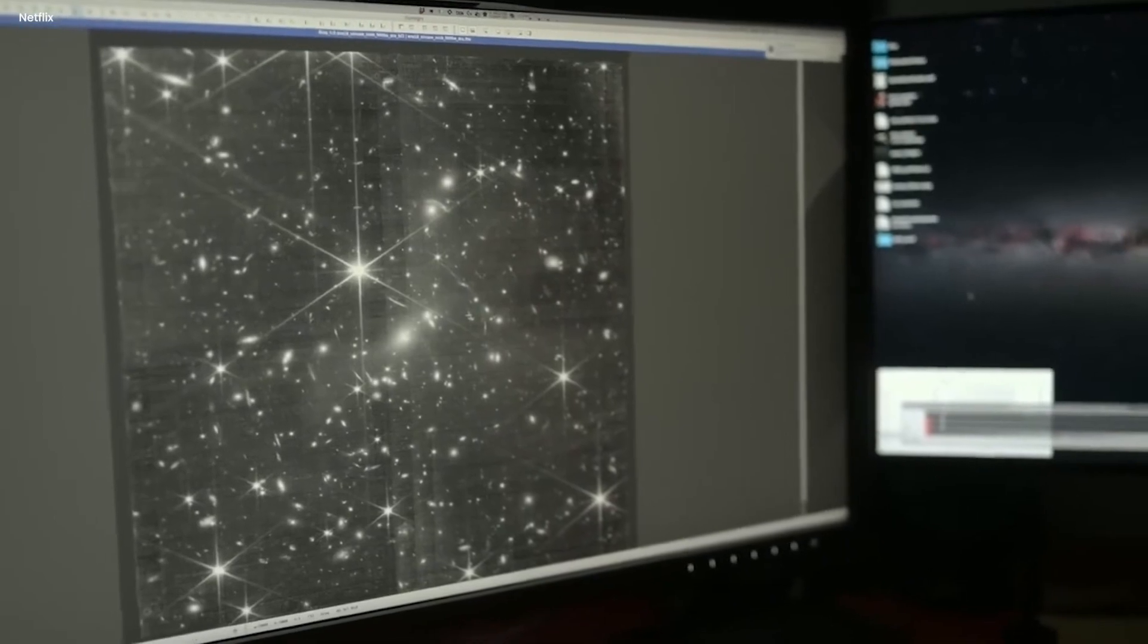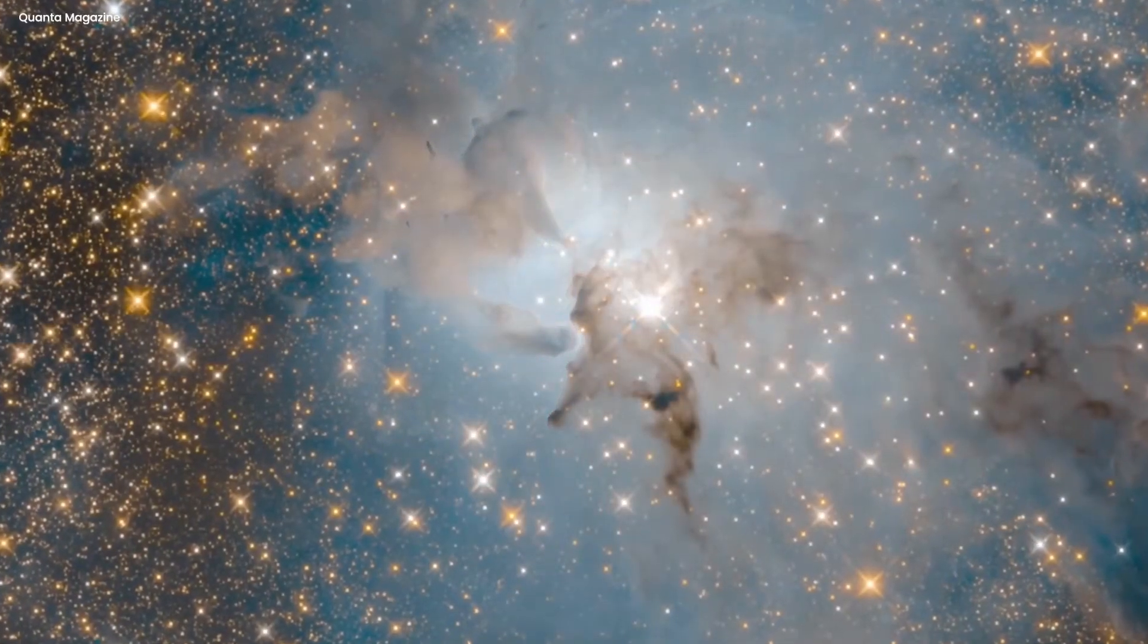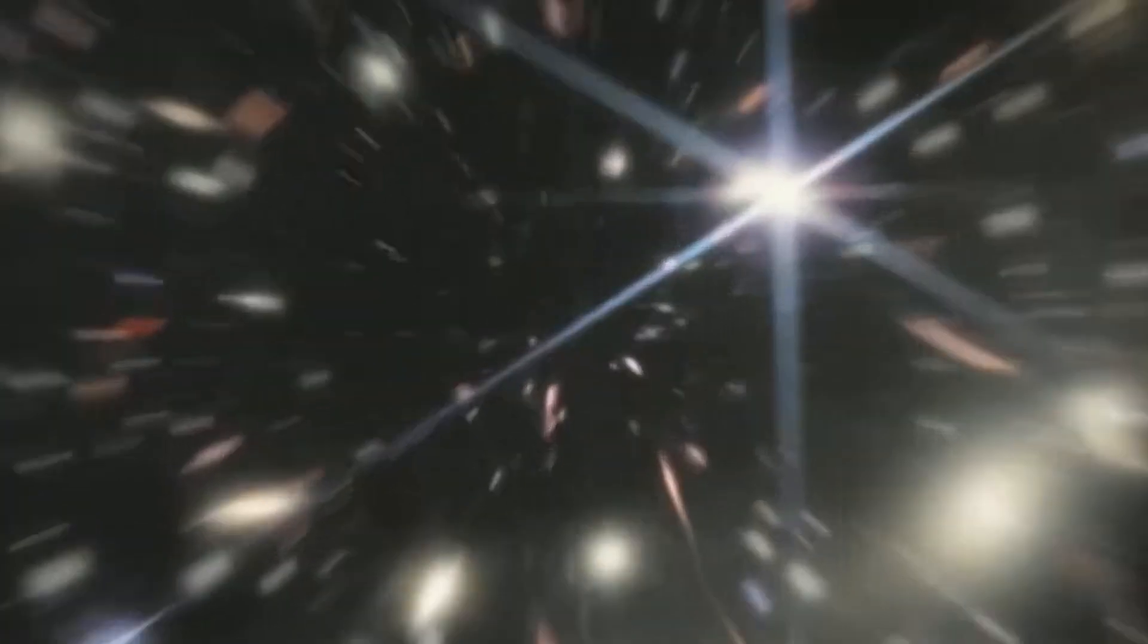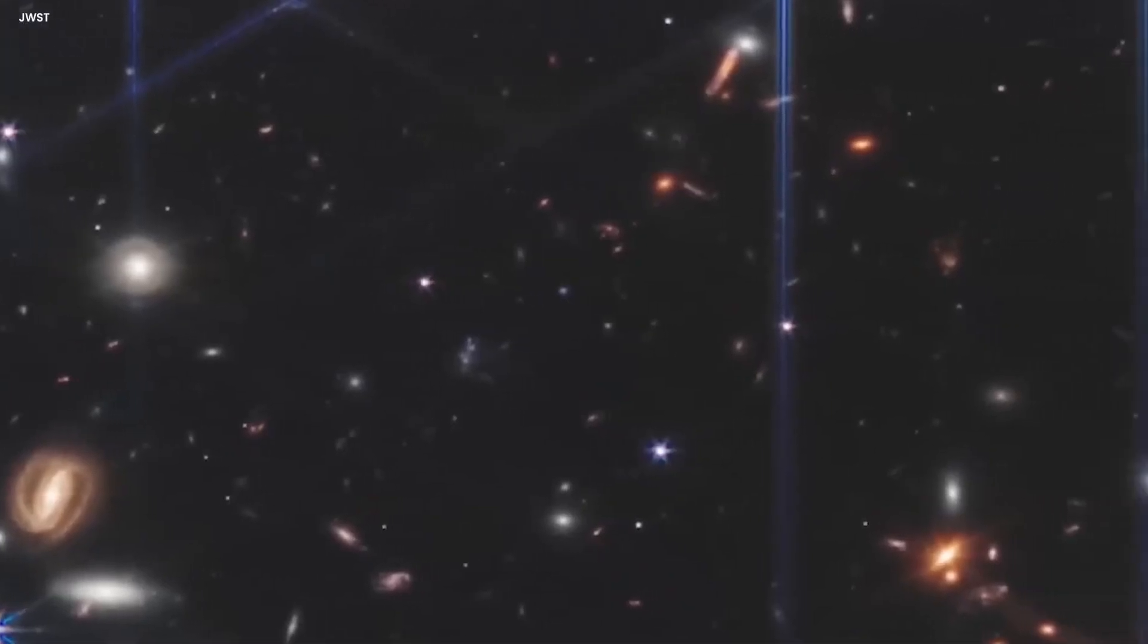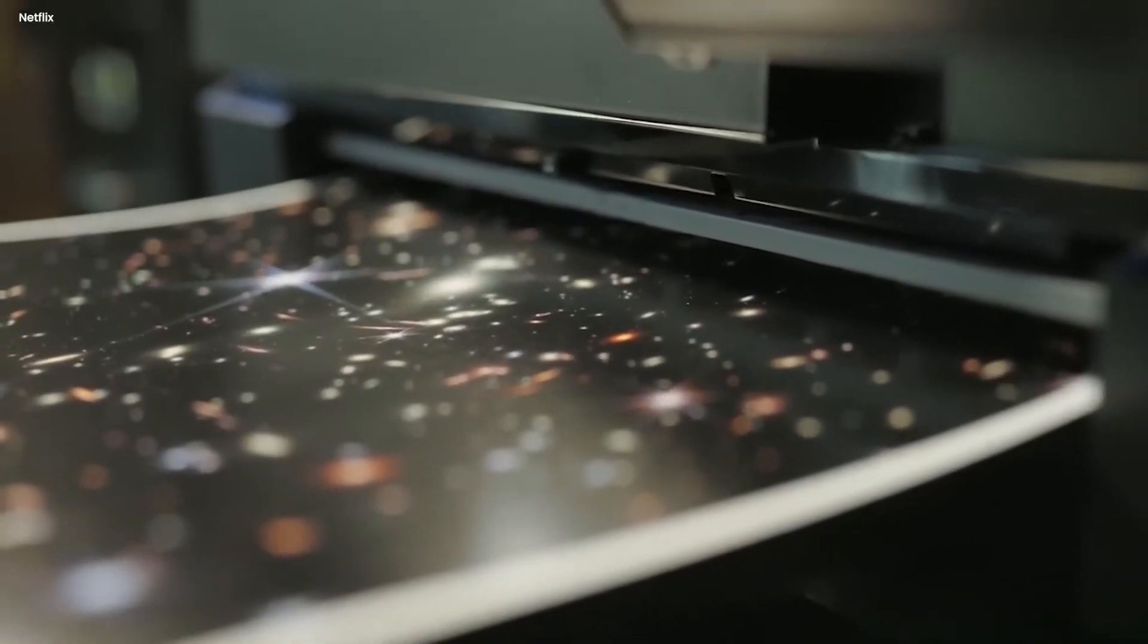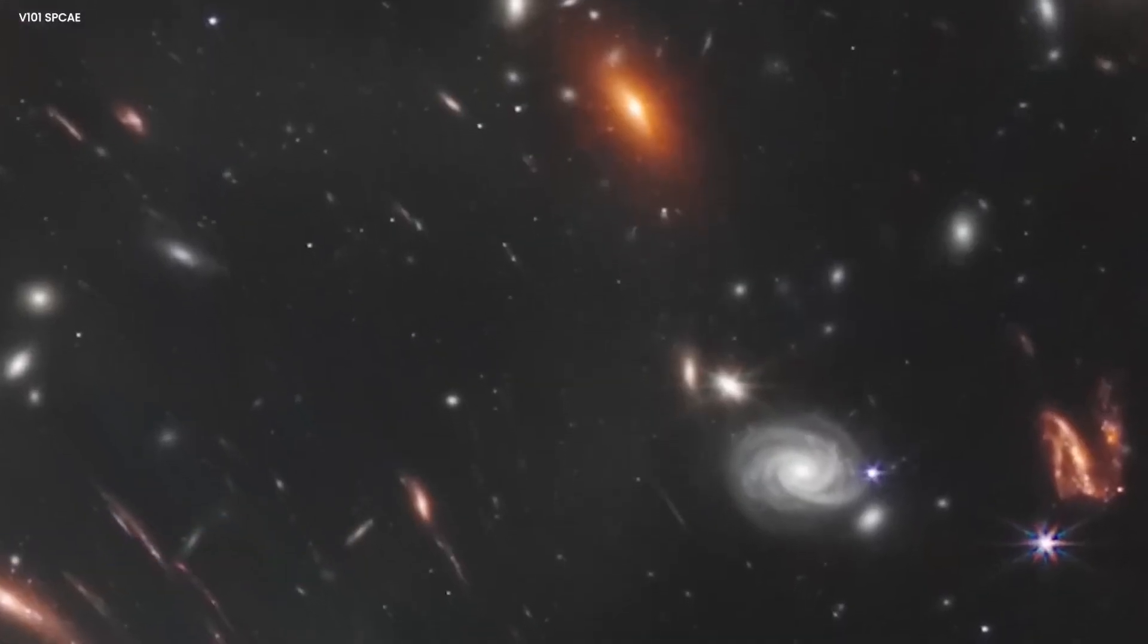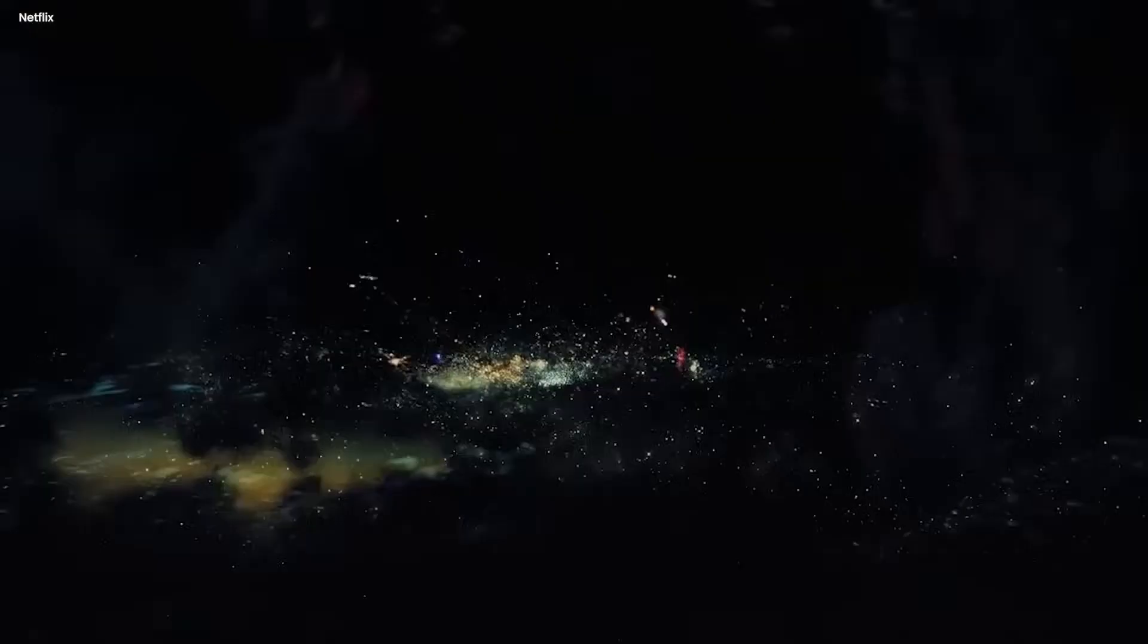This deep field image is an intricate composite of images at different wavelengths, encompassing a total exposure time of 12.5 hours. SMAX 0723 is acting as a gravitational lens due to its mass, magnifying some of the more remote galaxies. The image provides a glimpse of SMAX 0723 as it existed 4.6 billion years ago, with numerous galaxies positioned both in front of and behind the cluster. These galaxies emitted light billions of years ago.